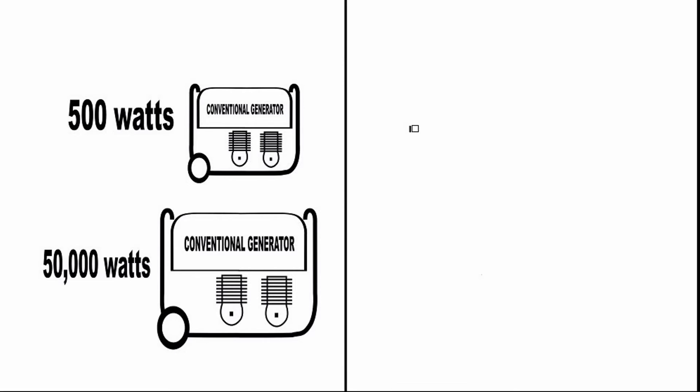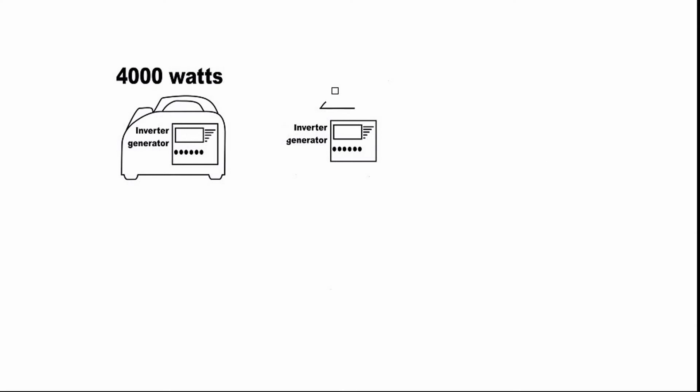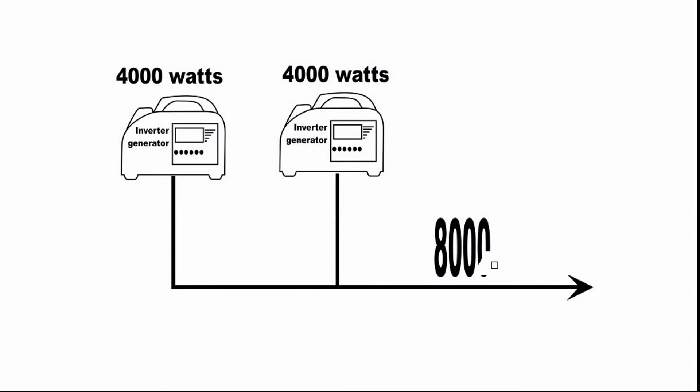Conventional generators come in just about any size you want, from 500 watts up to 50,000 watts and higher. Inverter generators are more limited. They are mainly available in 1000 to 4000 watt models, but can be paired with another identical unit to double your power capacity.